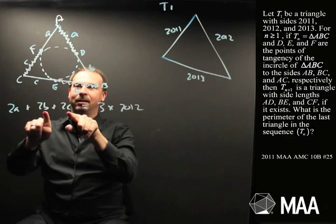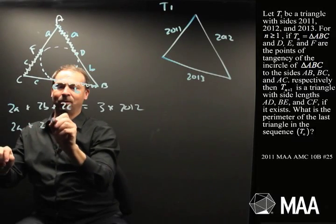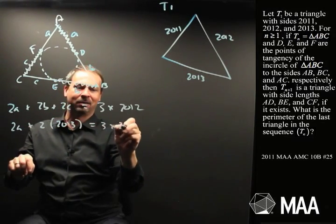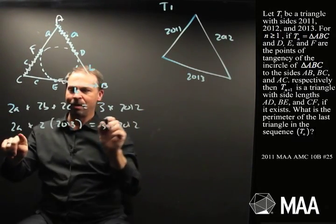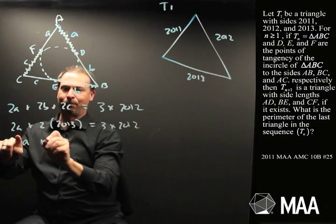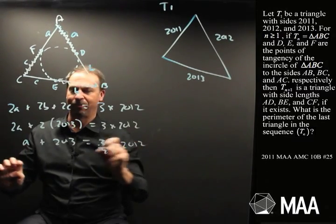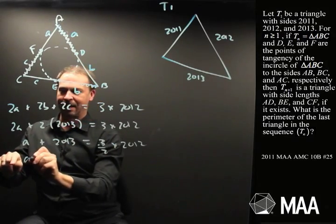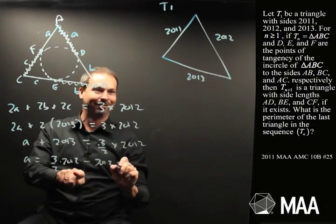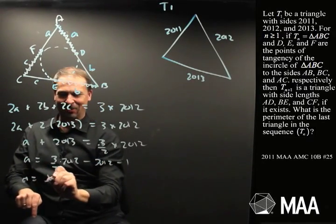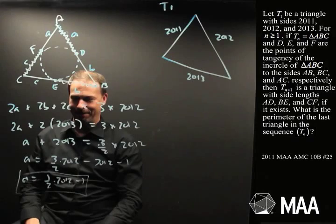And we did say that B plus C, we know what B plus C is. That's 2013. Two A plus two 2013s is three 2012s. Now what? Well, let's divide everything by two. A plus 2013 is what? One and a half. Two thousand and twelves. Trying to avoid actual arithmetic if I can help it. Let's subtract. A is three halves of 2012, take away a 2012, take away a one. A is one half of 2012, take away a one. There's an actual number for A. I suppose I could work it out.